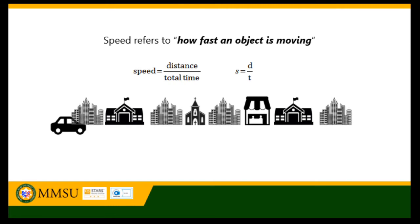Speed is given by the equation: speed equals total distance divided by total time, or s equals d over t. A fast-moving object has a high speed, while a slow-moving object has a low speed. An object with no movement has zero speed. The average speed of an object is defined as the total distance traveled along its path divided by the time it takes to travel that distance.